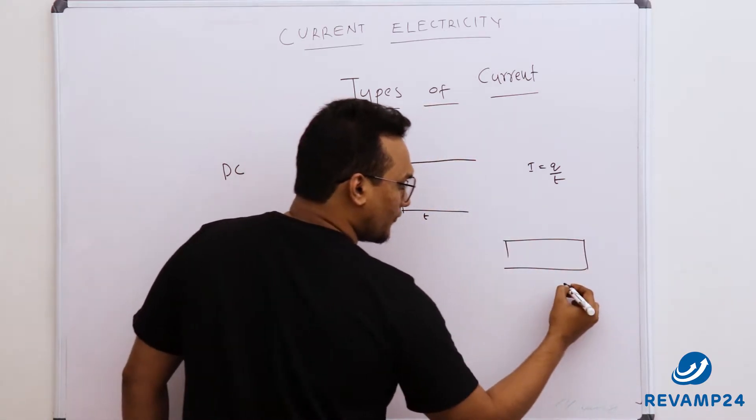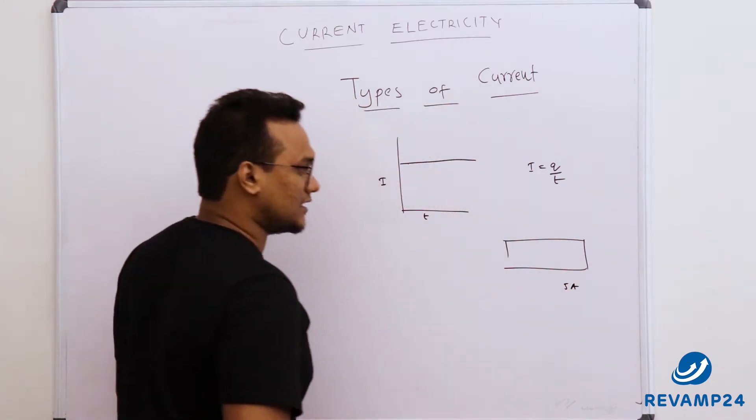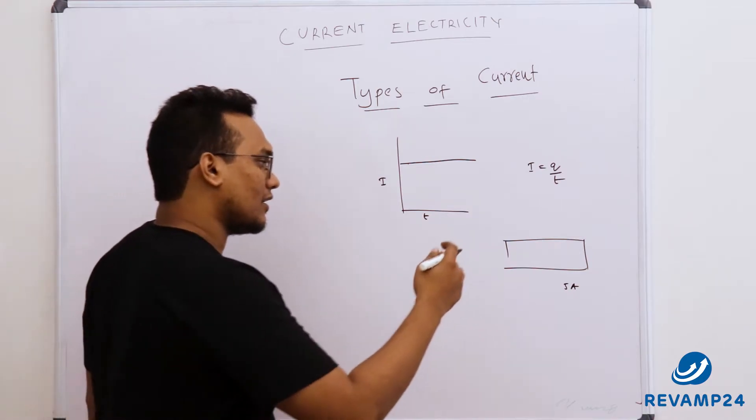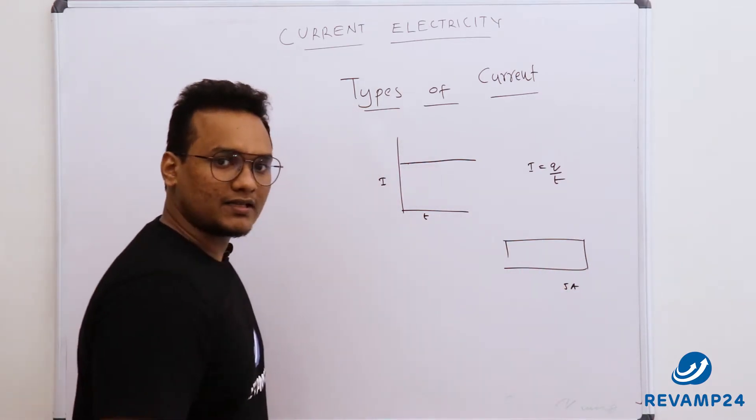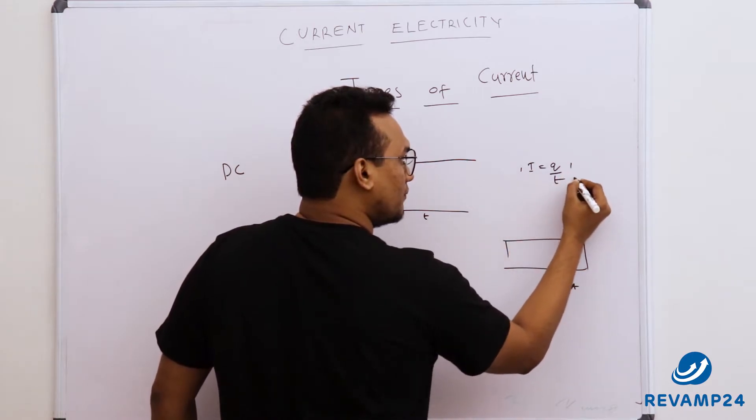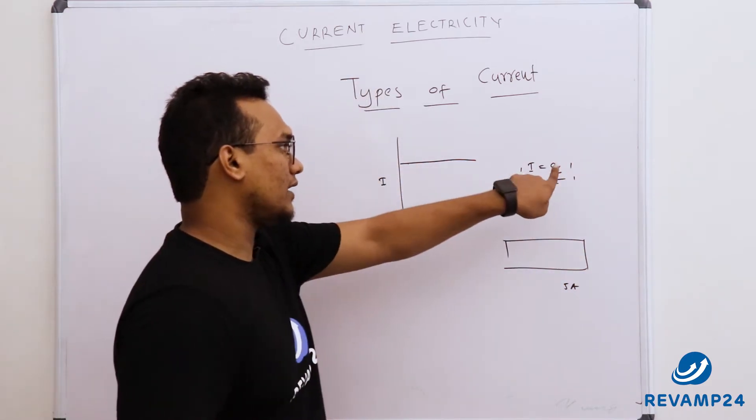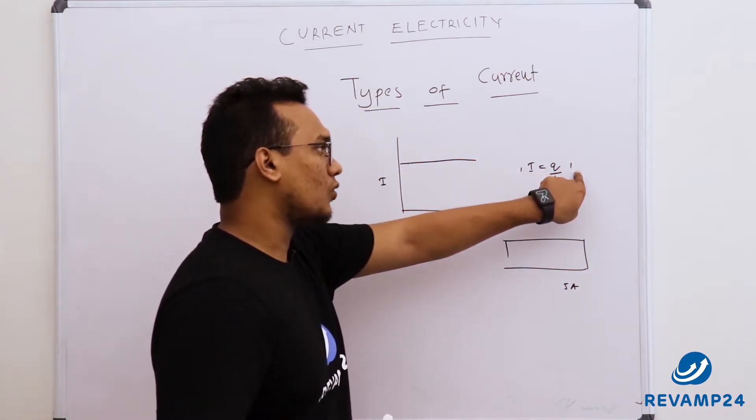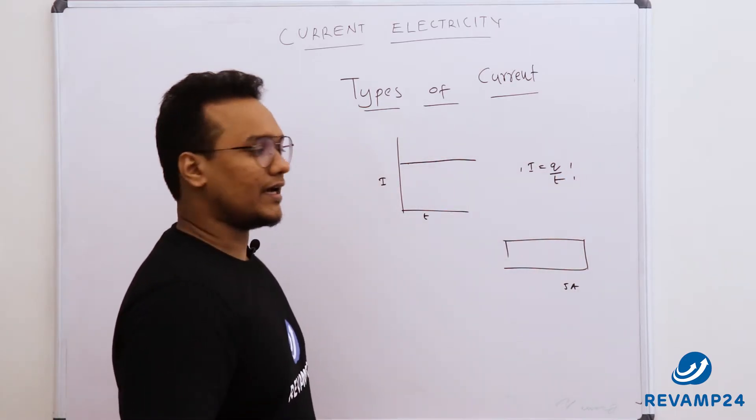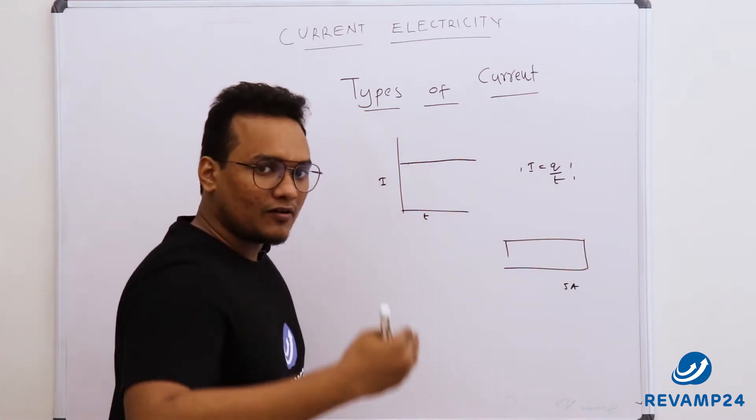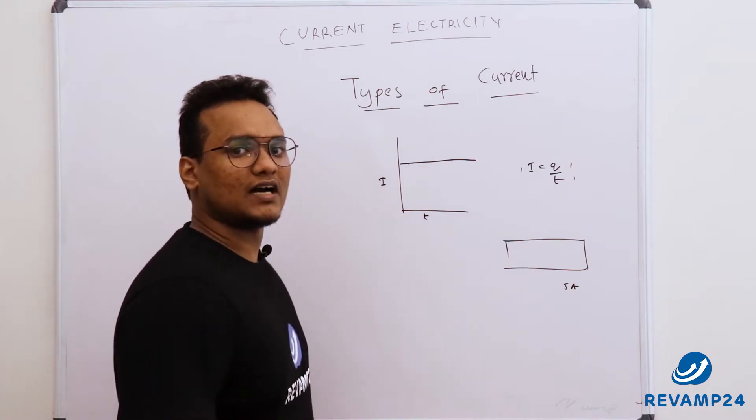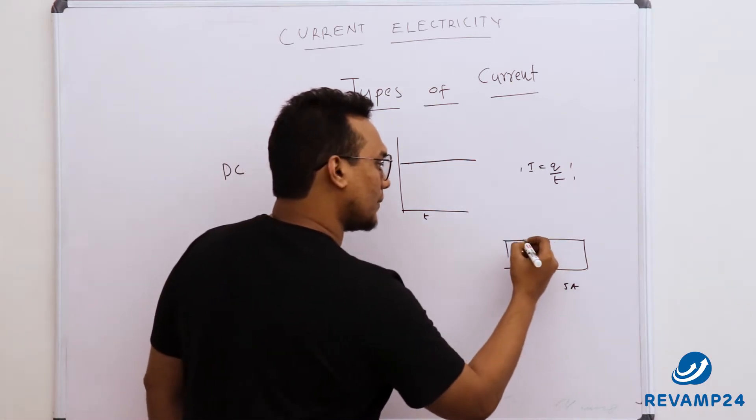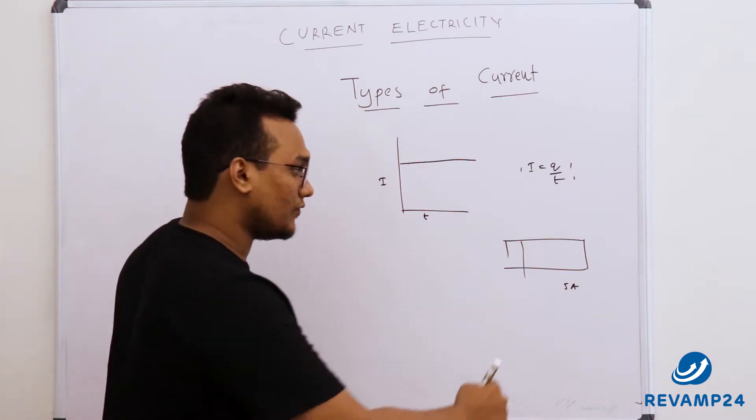Now if five ampere is the value of current through the conductor, what does five ampere mean? One ampere means one by one. So what is one by one here? Flowing one coulomb in one second. Clear? So five ampere means flowing five coulombs of charges in one second through the particular cross sectional area.